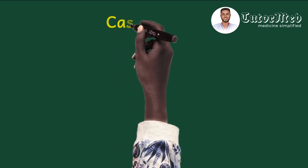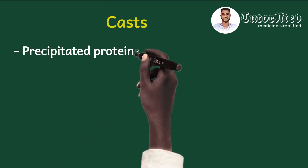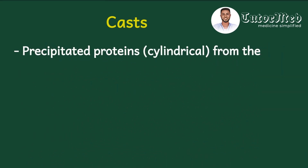In microscopy we said to look for the three C's and one M. The first C is cells, which has been dealt with in our previous video. The second C is casts. Casts are precipitated proteins which are cylindrical in shape because they take the shape of where they were produced — the renal tubules, specifically the thick ascending loop of Henle, although some literature documents they are produced from the distal convoluted tubule and the collecting duct. Their presence indicates renal origin.